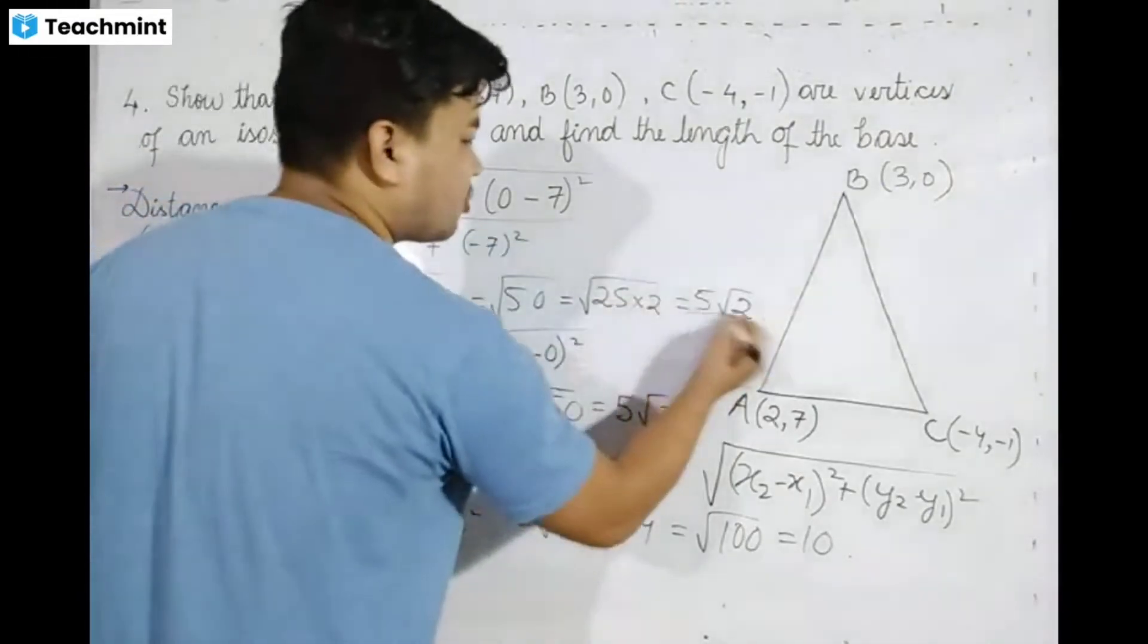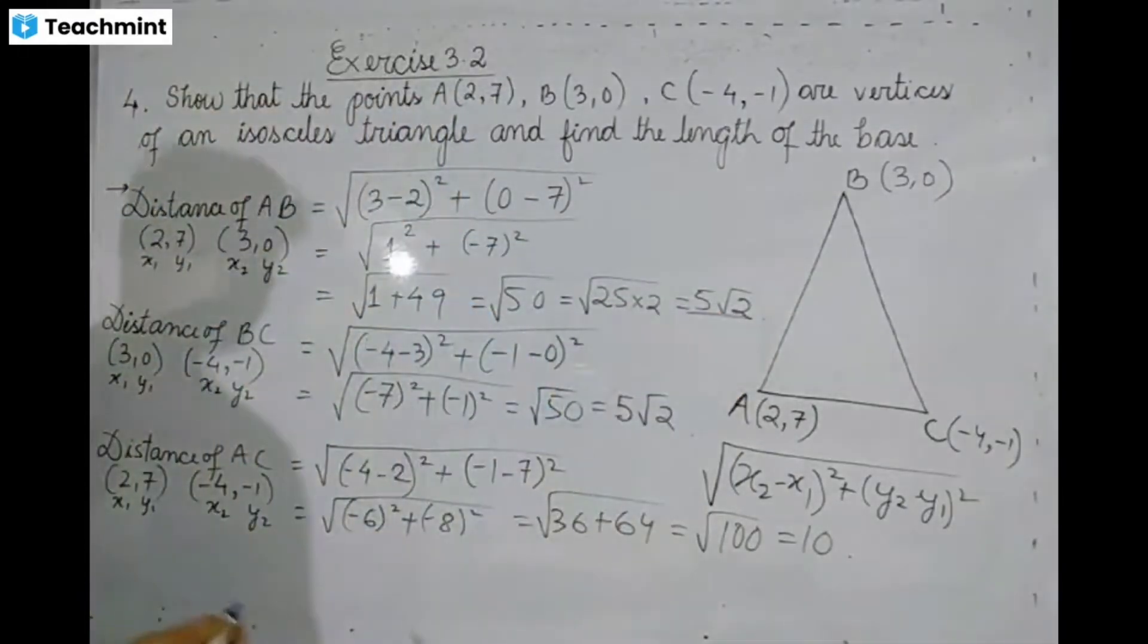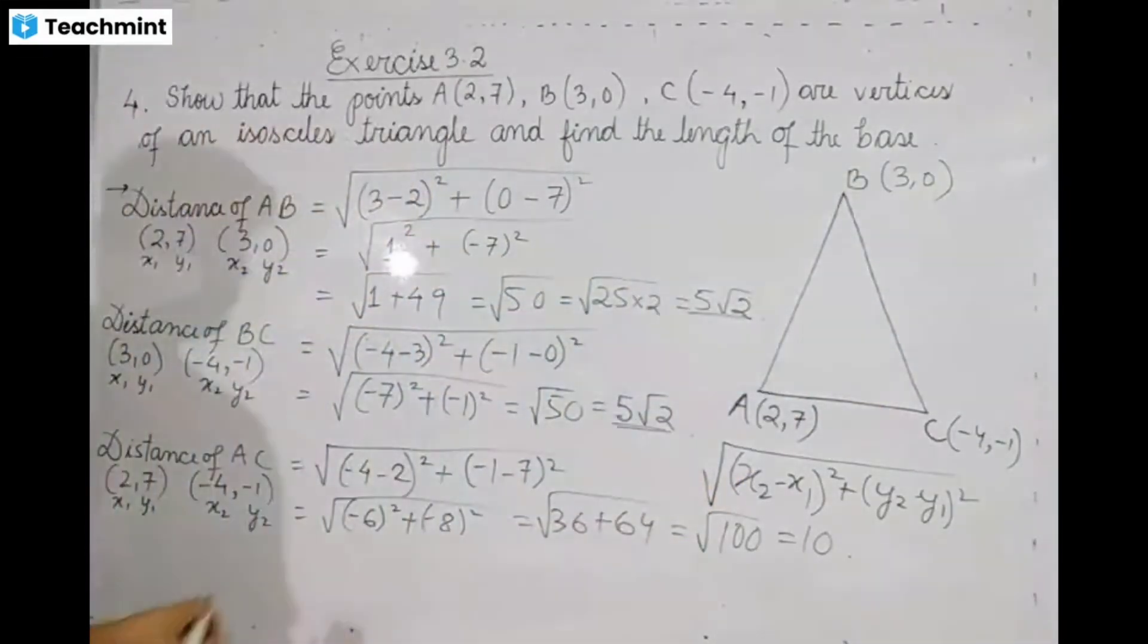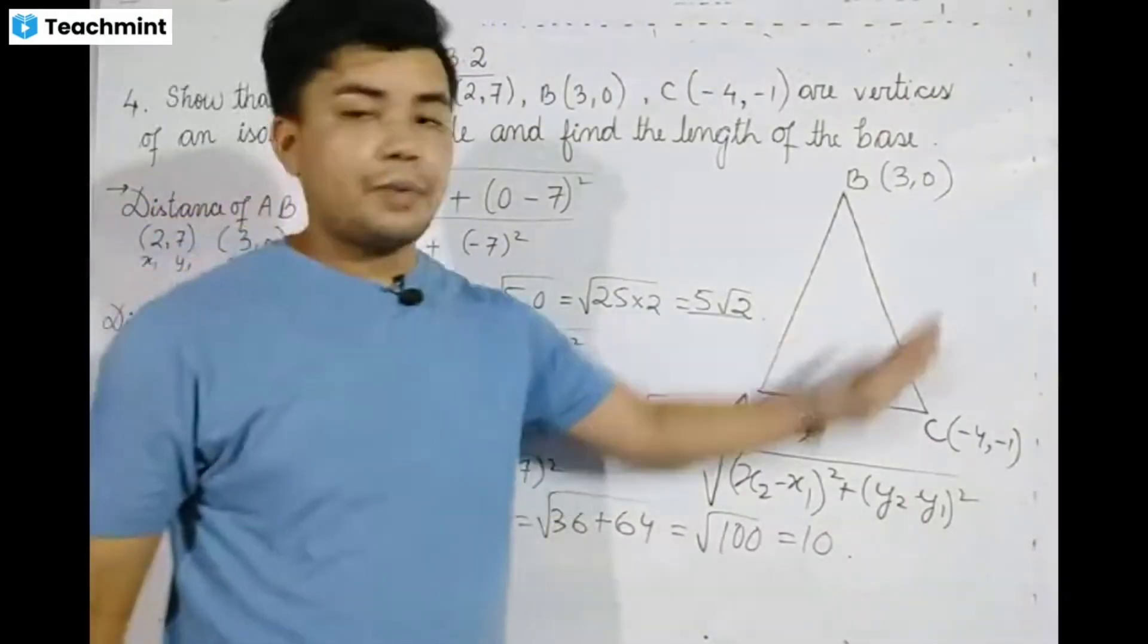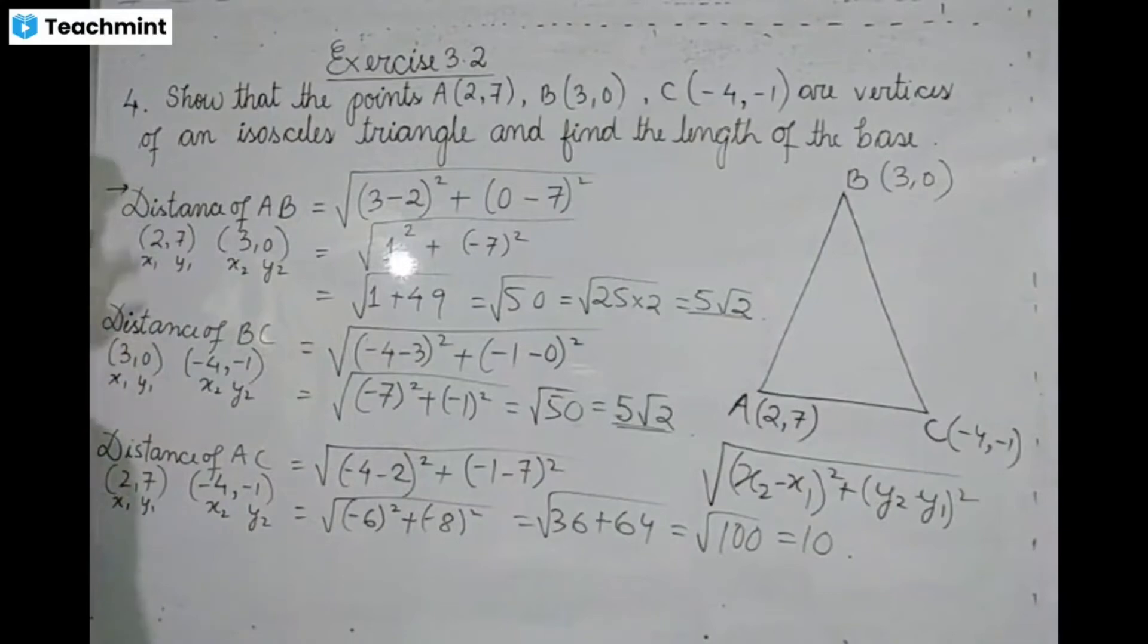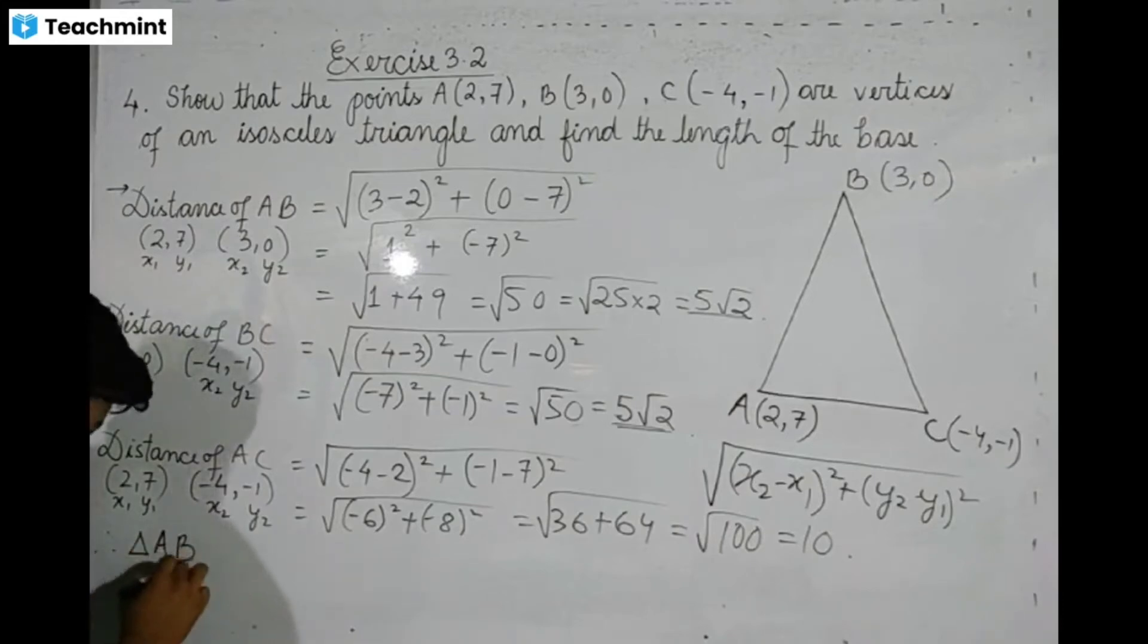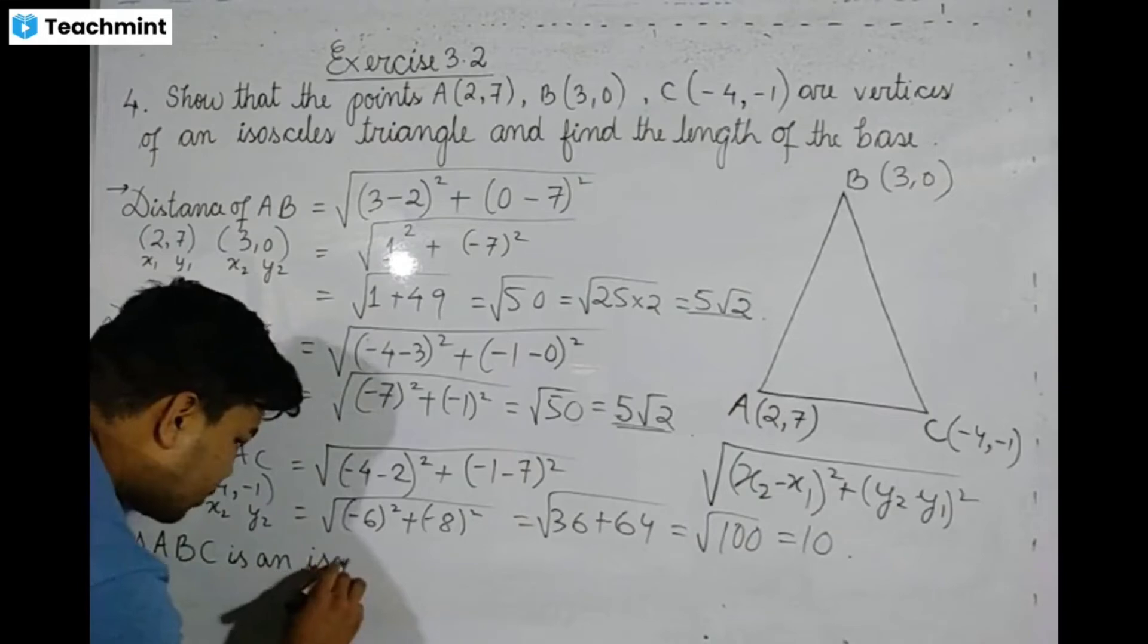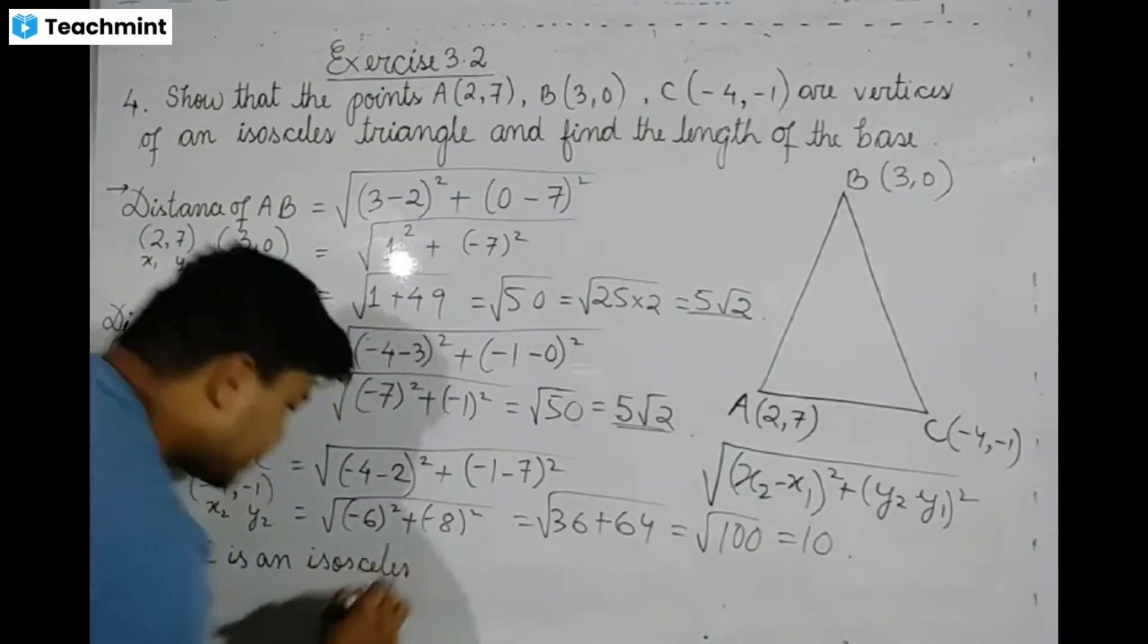AB is 5√2 and BC is 5√2. The distances are the same. Therefore, triangle ABC is an isosceles triangle since AB is equal to BC.